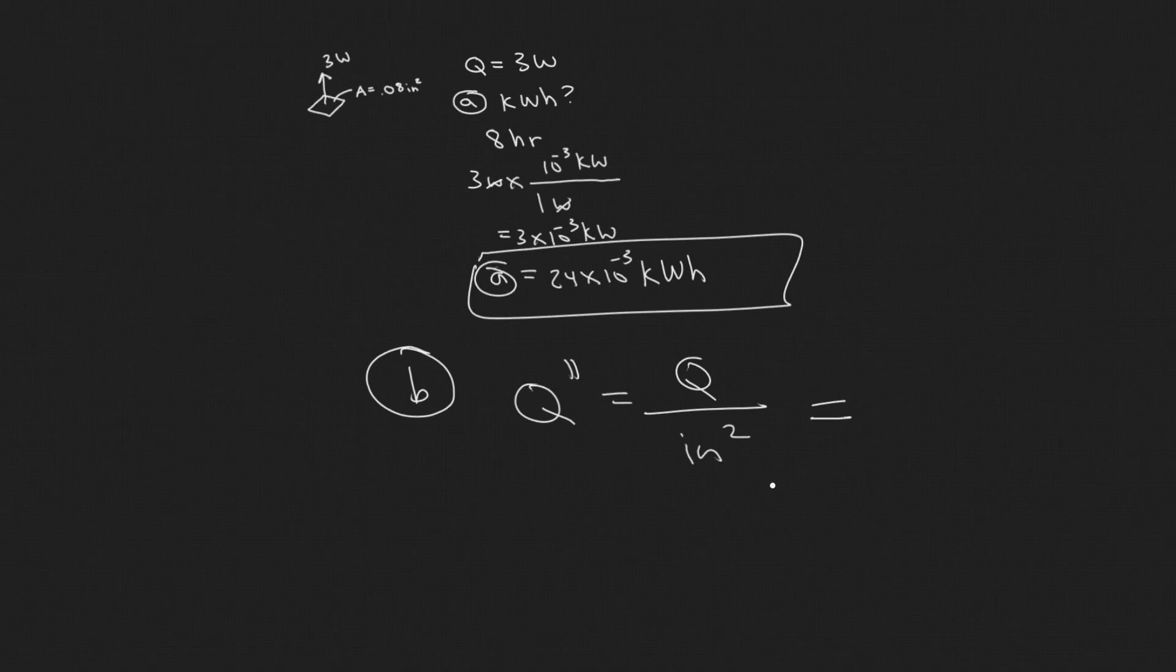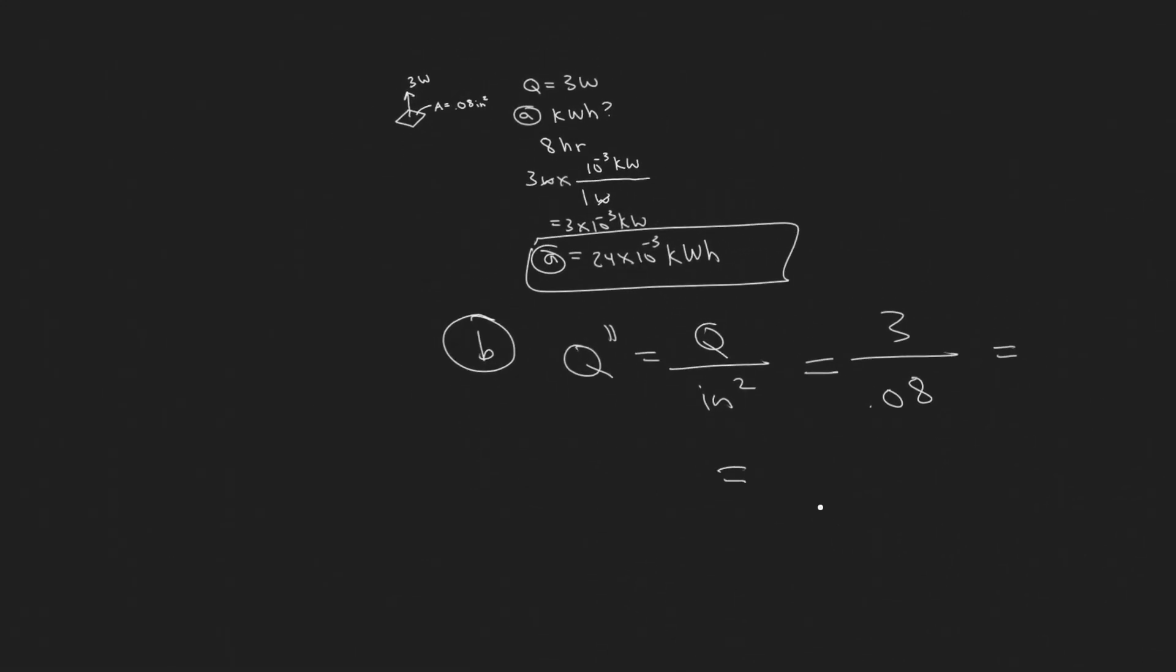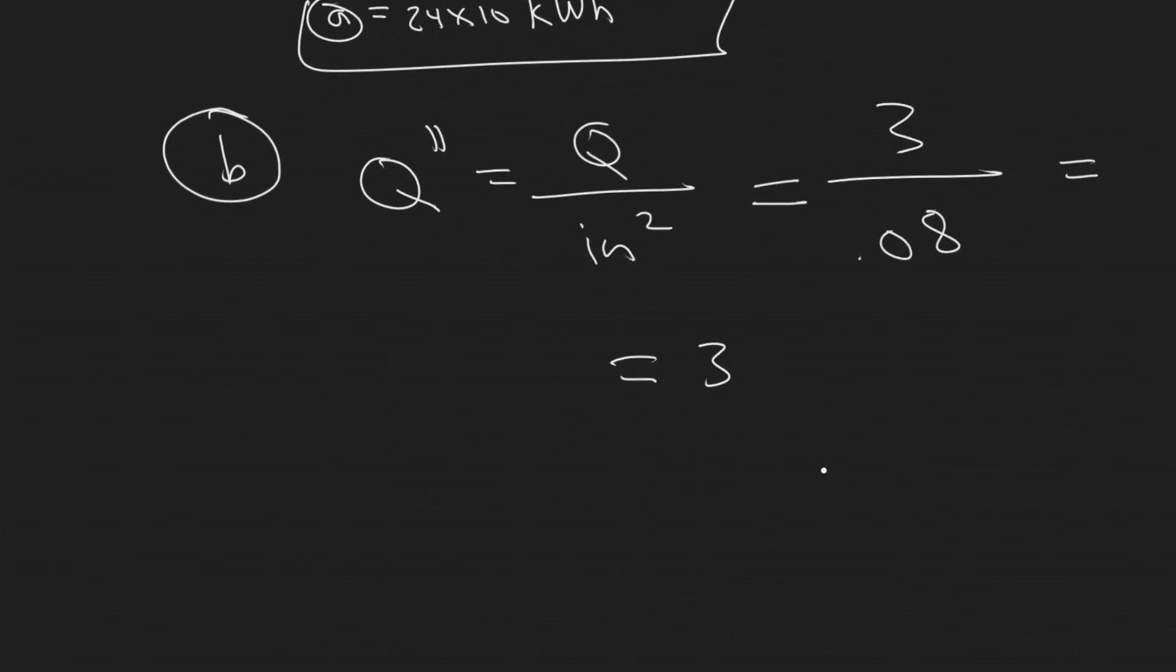So they're asking us for watts per inches squared. So you're basically just going to do 3, and then divide it by the surface area. So 3 divided by 0.08. So it's equal to 37.5, and then the units are going to be watts per square inch. So this is your answer to B.